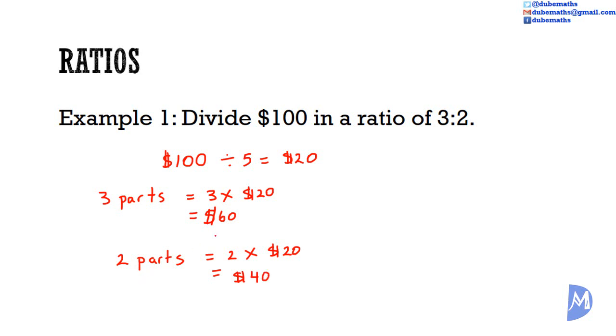And the 2 parts is equal to 2 multiplied by $20 which is equal to $40. And of course, if we add $60 to $40, we will get back the $100 we started with.